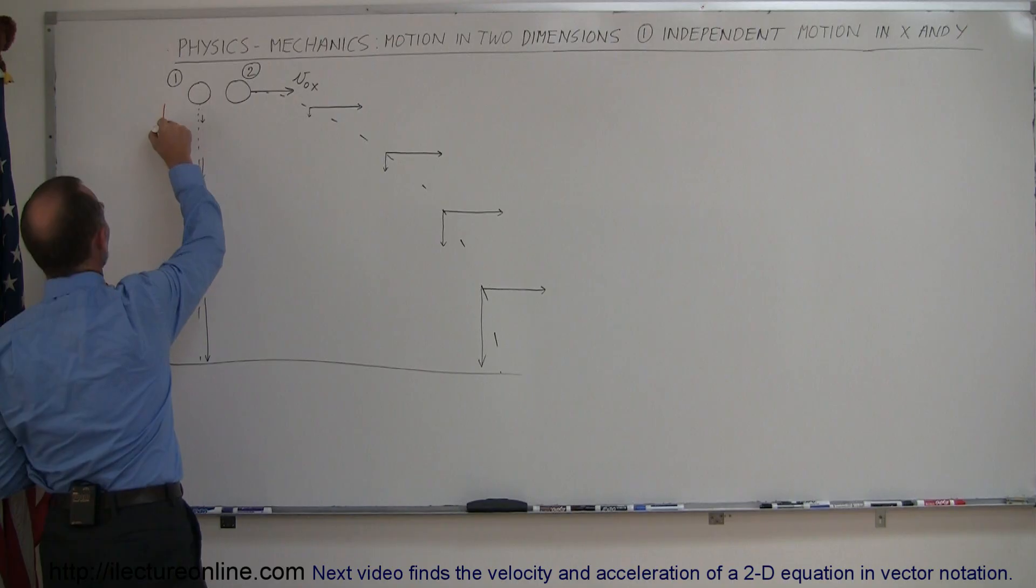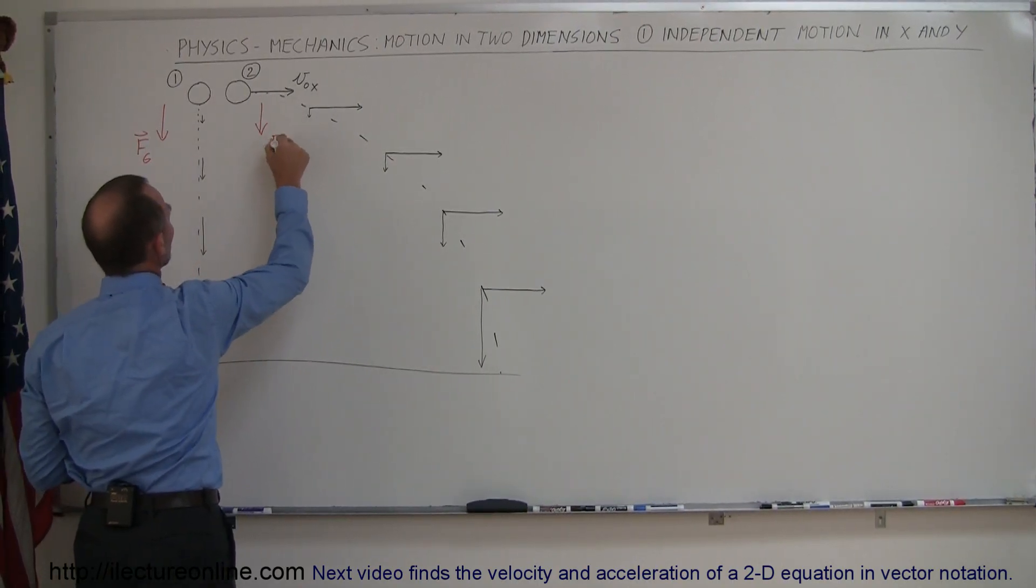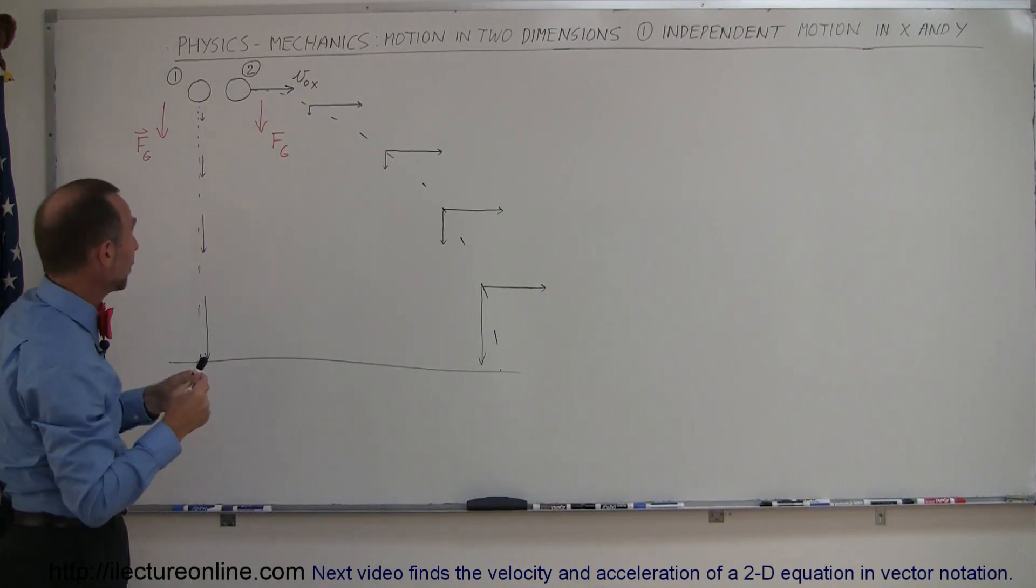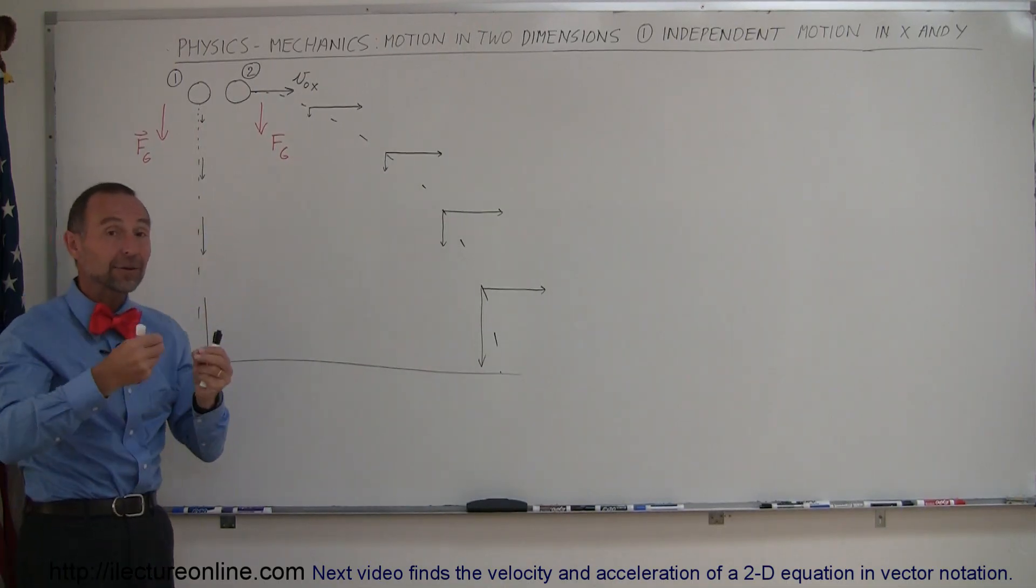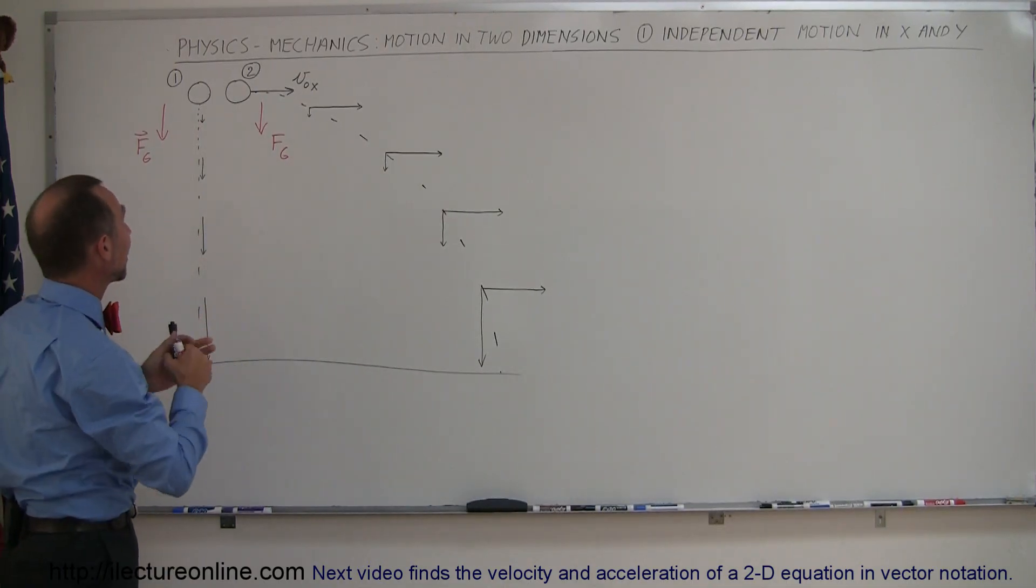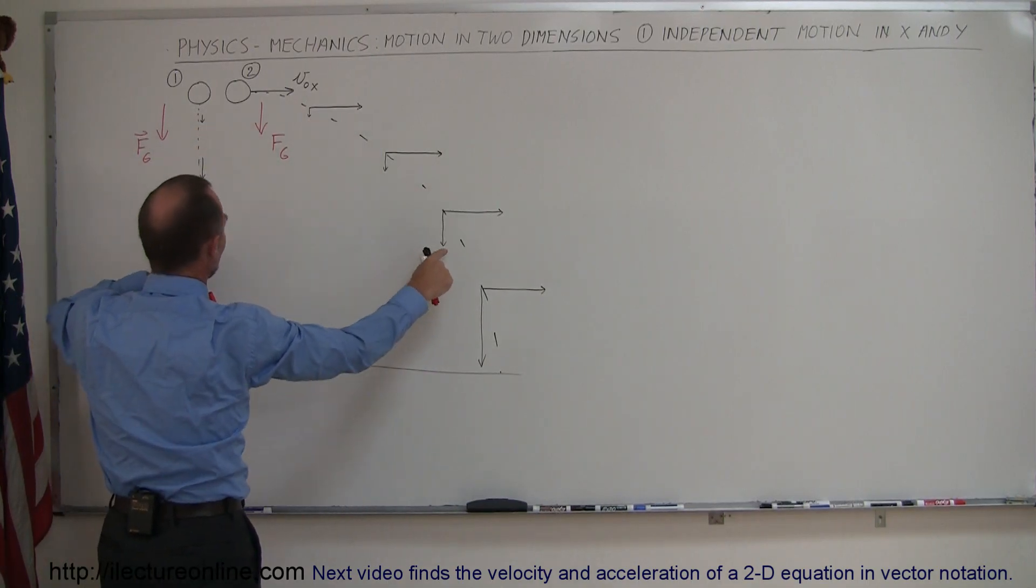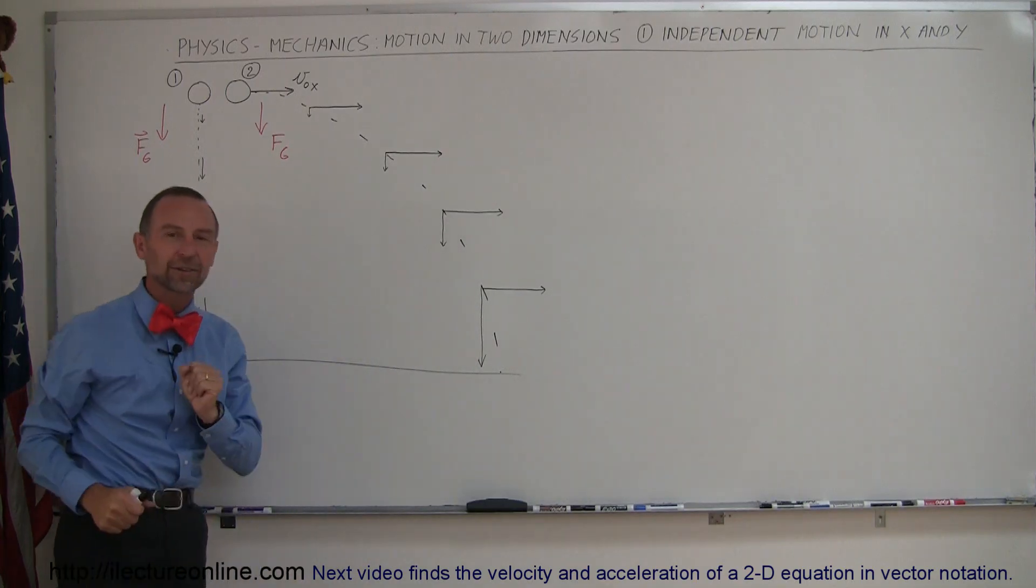So on the left ball we have a force due to gravity and on the right side we have a force due to gravity. So both balls feel the exact same force assuming that they have the same mass and so therefore they're being pulled down or accelerated downward at the very same rate. You can see that the velocities in the y direction are the same at the same time interval and you can see that therefore they will hit the ground at the very same time.